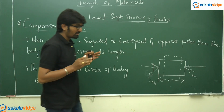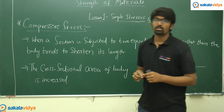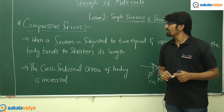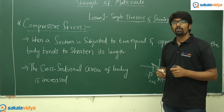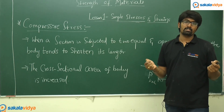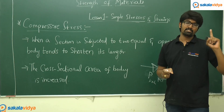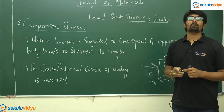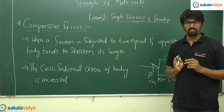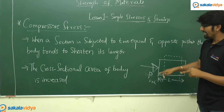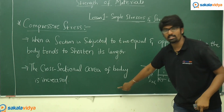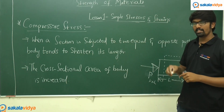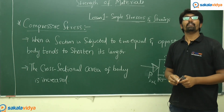So, what is compressive stress? On the application of two equal and opposite pushes, compressive stress is induced. Please do not get confused: in tensile stress, we apply two equal and opposite pulls, whereas in compressive stress, we apply two equal and opposite pushes. In the compressive case, there is an increase in cross-sectional area and a decrease in length. Whereas in the tensile case, there is an increase in length and a decrease in cross-sectional area.